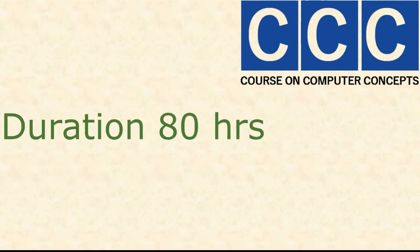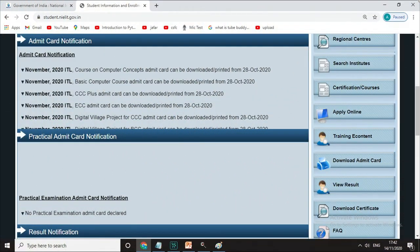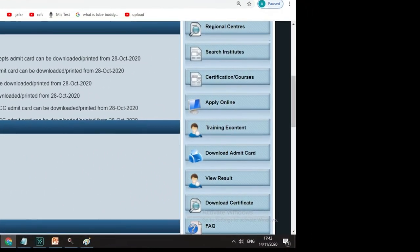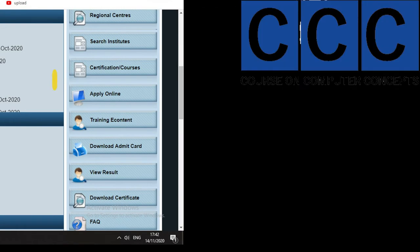Duration of this course is 80 hours, means you can complete it in three months. You can even complete it within a short time also. Triple C is a totally online course. The form is filled online, you give the exam online, you will get the result after one month online, and you will download the certificate after two months, that is also online.